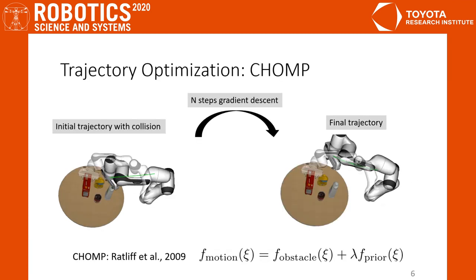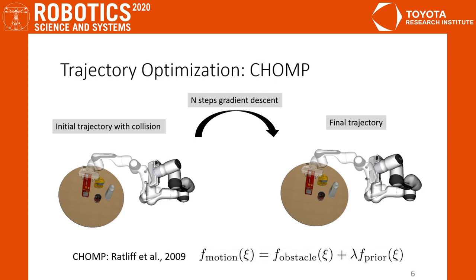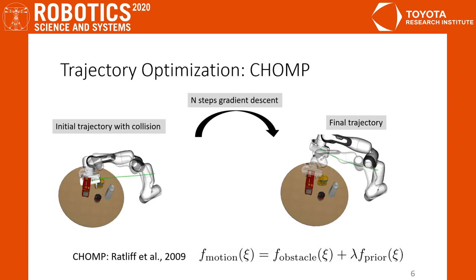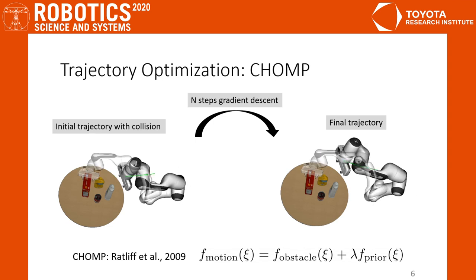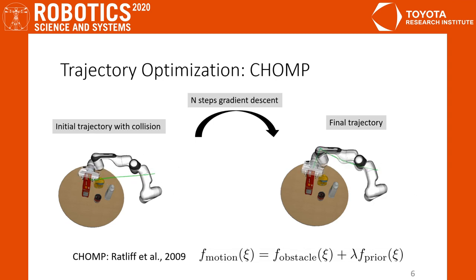The CHOMP framework defines its objective f_motion as a combination of smoothness and collision cost on the trajectory side and optimizes via gradient descent on a smoothness matrix. The video shows that the trajectory can be optimized to smoothly curve around the obstacle.